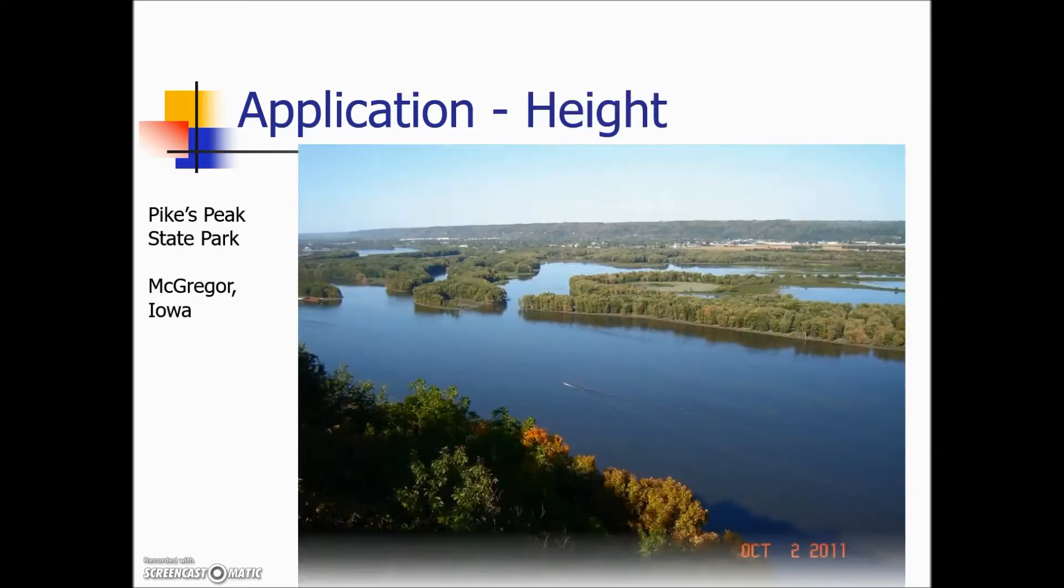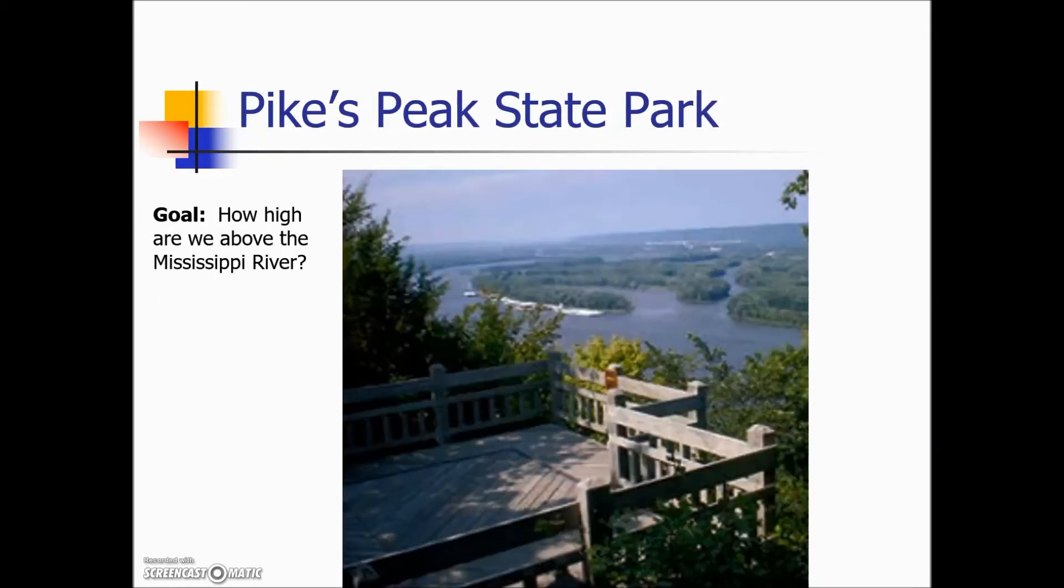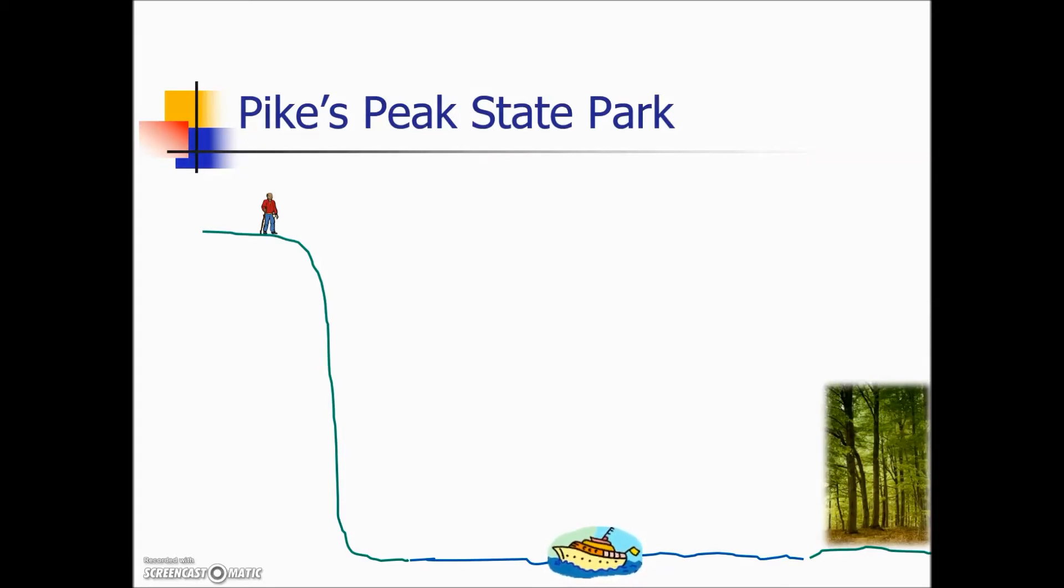Here's an application. Pike's Peak is located in McGregor, Iowa and our goal is to find how high are we above the Mississippi River. So here we are on an observation deck. We're going to use a rangefinder to determine a point down on the river. So here's a drawing of what's going on.